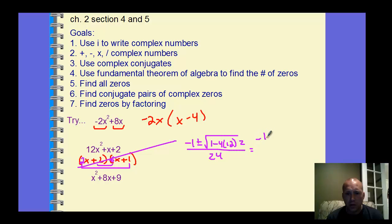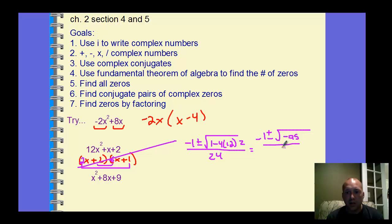Notice with this problem we're doing negative 1 plus or minus — the issue is we're going to be doing 48 minus 96, so 1 minus 96, giving us negative 95. So we're going to be talking about today what happens when we get a negative value underneath the radical.